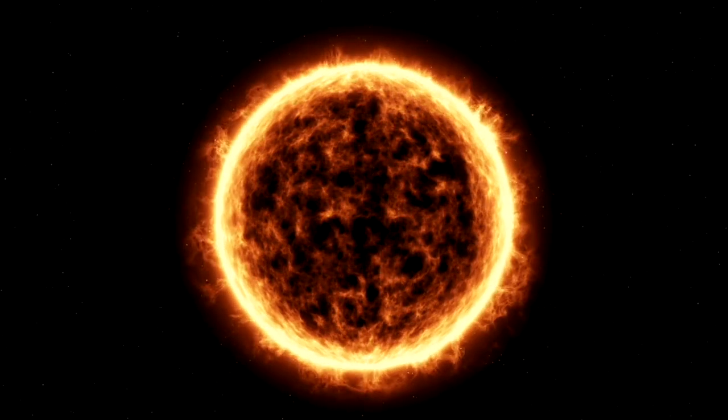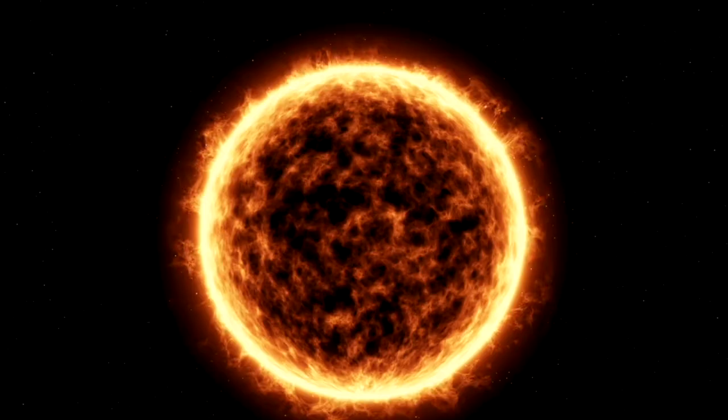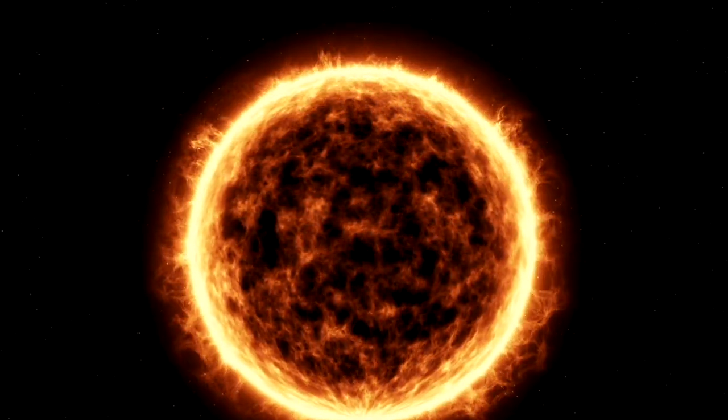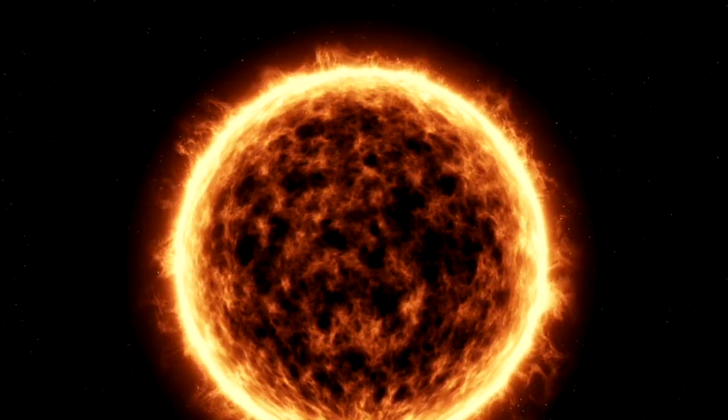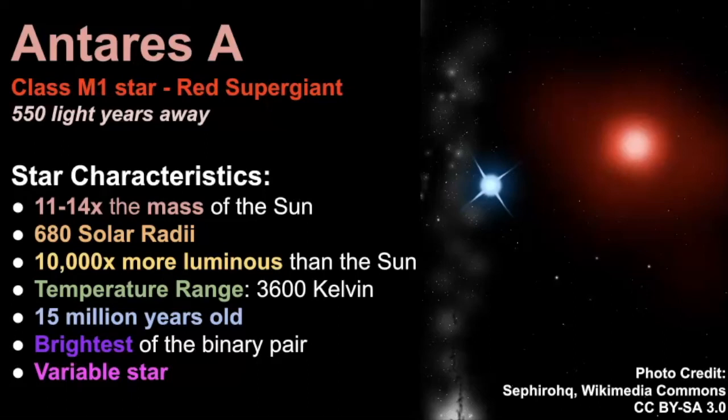So remember, cooler stars tend to be in the red zone, red color, whereas hotter stars tend to be blue. This system is estimated to be 15 million years old, so much younger than our own system. And it's the brightest of the binary pair, and it's a variable star. So its magnitude can change over the course of time.